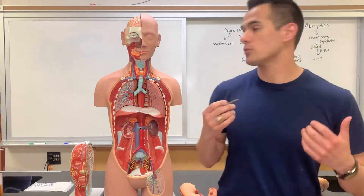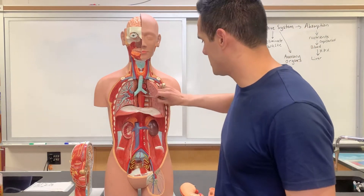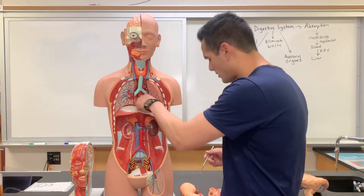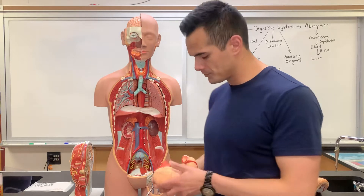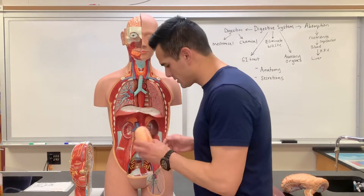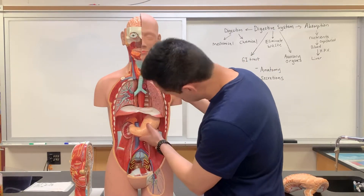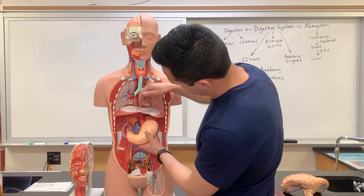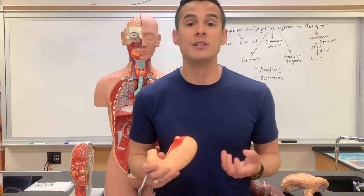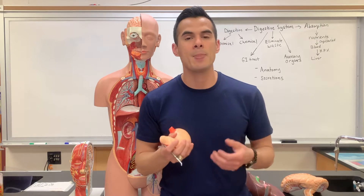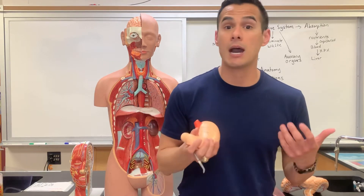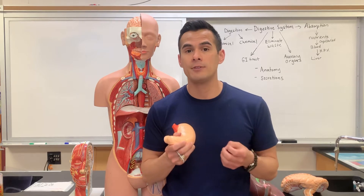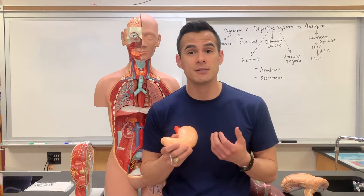This bolus is what travels through the esophagus. Here you can see the esophagus, and towards the terminal end of the esophagus is the stomach. Once it reaches the stomach, that bolus turns into a mixture known as chyme. Chyme is formed based off of the secretions within the epithelium of the stomach.